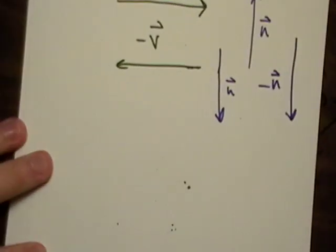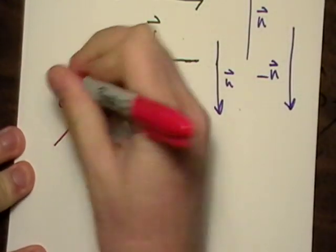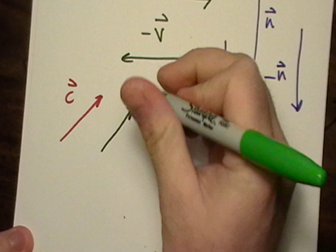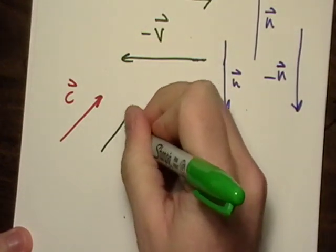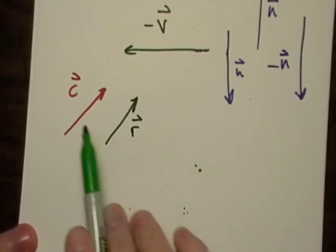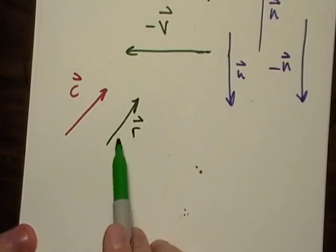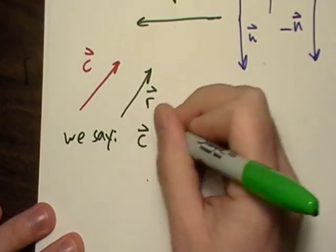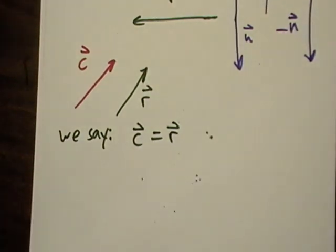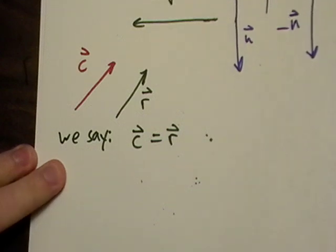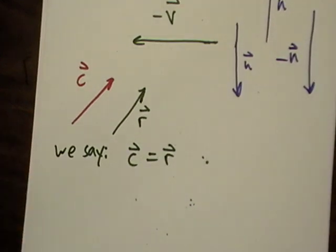Say I have vector C and I have vector R. Let's say they have the same magnitude and direction, the same length and they're pointed in the same direction. Then we say that vector C is equal to vector R. That's just a couple things that you should know.